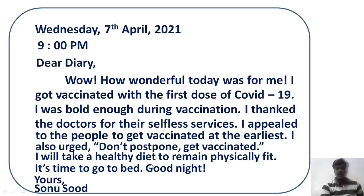Then write the closing line: 'It's time to go to bed. Good night.' And the writer's name: 'Yours, Sonu Sood.' Note — do not put an apostrophe between the R and S in 'yours.' That is the biggest mistake in creative writing. Write 'yours' exactly like this, without an apostrophe, but you can put a comma after it.